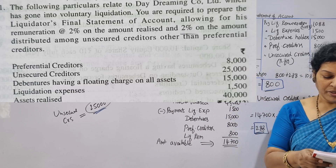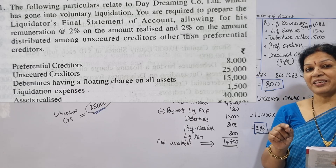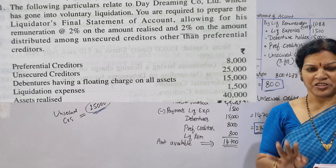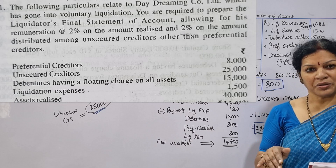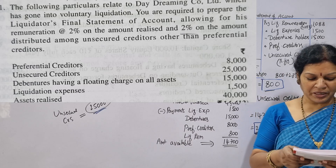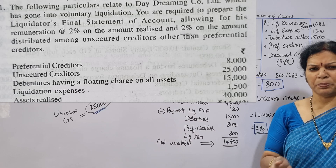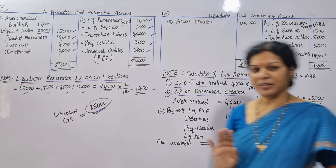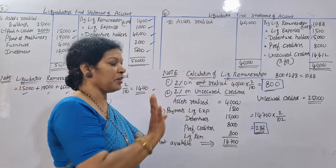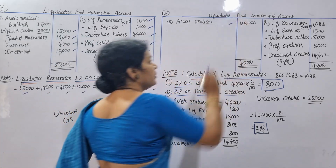The remuneration is: 2% on the amount realized, plus 2% on the amount distributed among unsecured creditors. So we have two commissions. The first is 2% on assets realized.